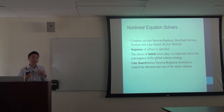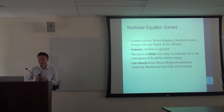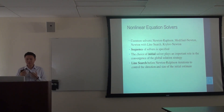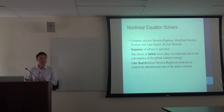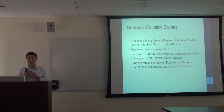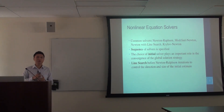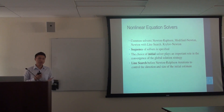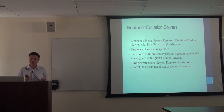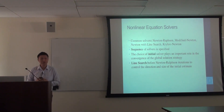We also looked into different nonlinear equation solvers for the implicit methods, for example the Newton-Raphson solver, modified Newton, Newton with line search, and Krylov Newton, to name a few. We observed that the sequence of solvers should be specified, so when one is not successful, depending on the state of the model, we can switch to different alternatives. The choice of initial solver plays an important role, and in particular the line search strategy before the Newton-Raphson iterations seems to be helpful to control the direction and the size of the initial estimate.